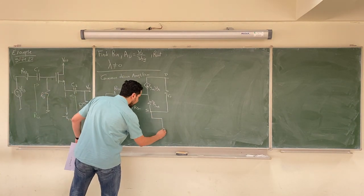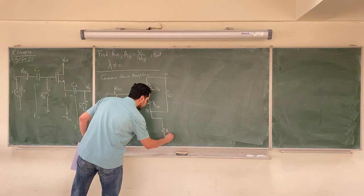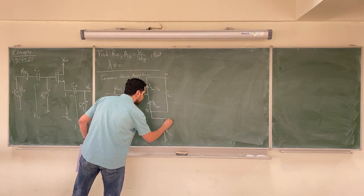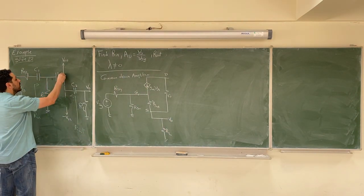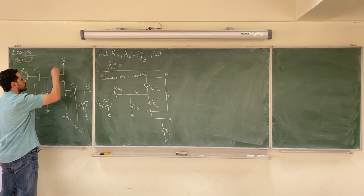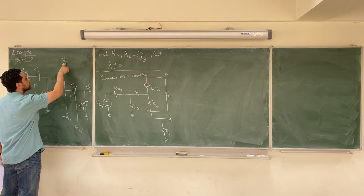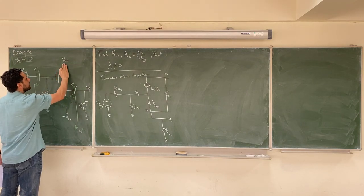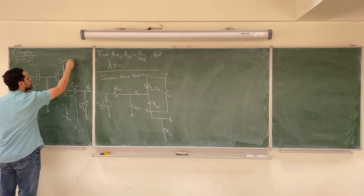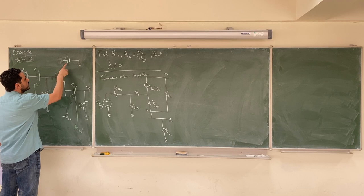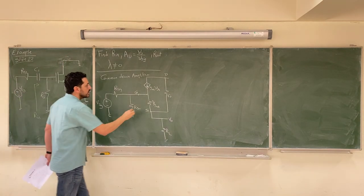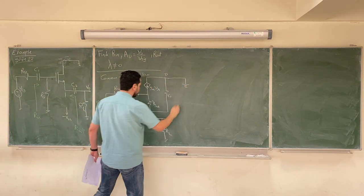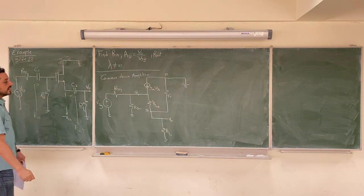Then we have RL towards the ground — this is our load — and the output is taken from this point. The drain is connected to a DC voltage source. In AC analysis the DC voltage source will be deactivated by making it short circuit towards the ground. A zero-voltage source means short circuit, so the drain will be short circuit towards the ground. This is now our AC circuit.